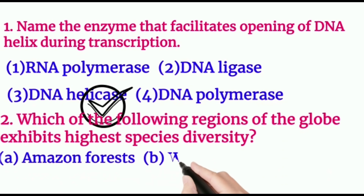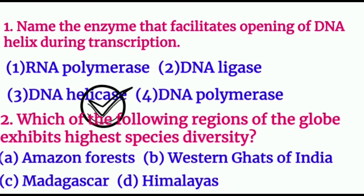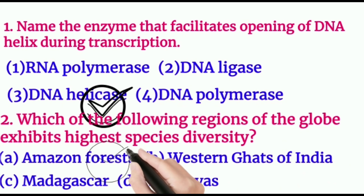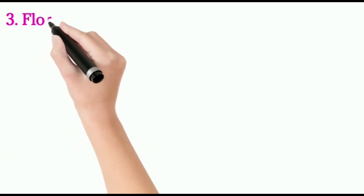Question number two: which of the following regions exhibits the highest species diversity? The lungs of the planet is Amazon forest. The right option is Amazon forest. Others are from India, including the Himalayas. Amazon forest exhibits a higher number of species compared to other areas, so the right option is Amazon forest.